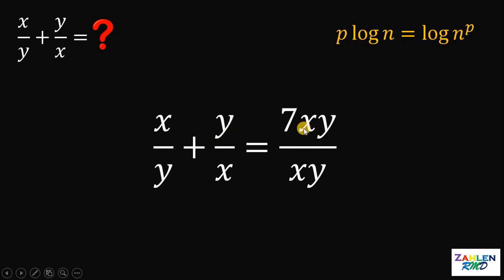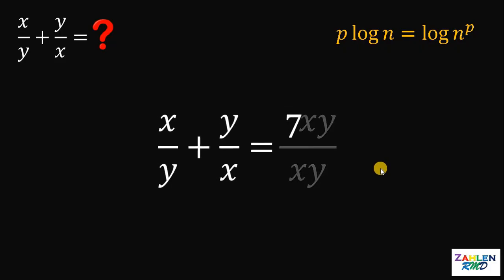Now, we have a factor of xy on the numerator and a factor of xy on the denominator. So, we can cancel both of them. And this is just 7.